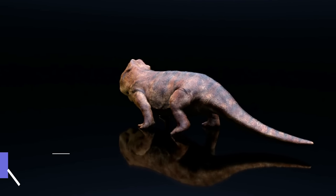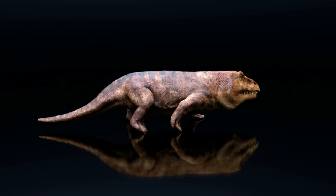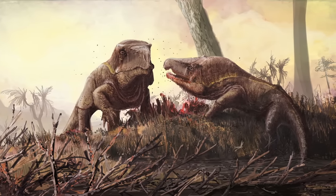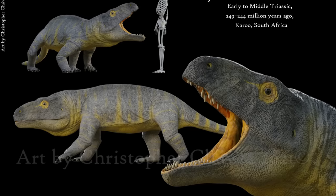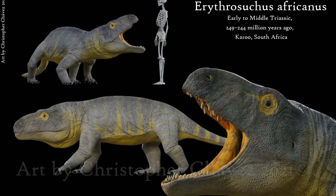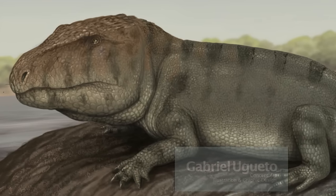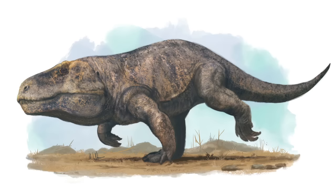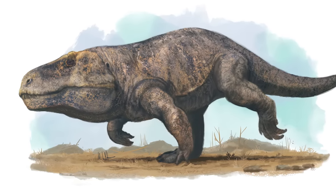Erythrosuchus is a genus of archosauriform reptile that belongs to the family Erythrosuchidae. It lived during the Middle Triassic period, approximately 240 to 230 million years ago. Like living crocodiles, they used a semi-erect limb posture, intermediate between the sideways sprawling posture of lizards and the fully erect posture of dinosaurs, birds and mammals. The largest erythrosuchids were up to 5 meters or 16 feet long, with heads almost a meter long. They probably looked like land-living crocodiles, although with longer legs, taller, narrower skulls and less armor.